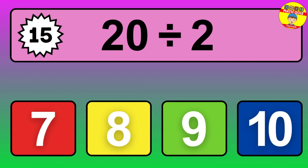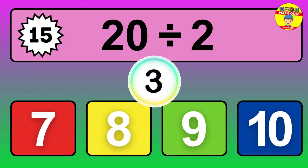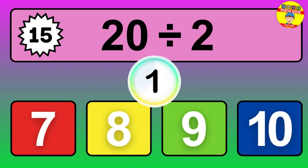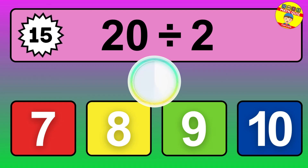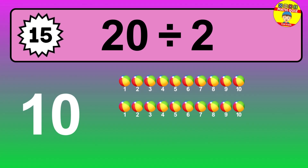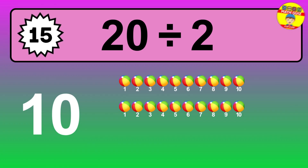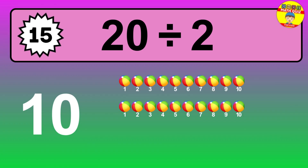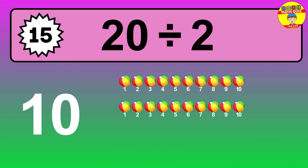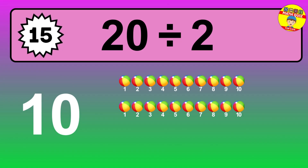What is 20 divided by 2? Picture this — you have 20 objects to divide into groups of 2. How many groups can you make? Let's think about it. Ready to find out? Let's break it down. Let's imagine you have 20 objects. Can you picture them lined up? Now think about splitting them equally into smaller groups.